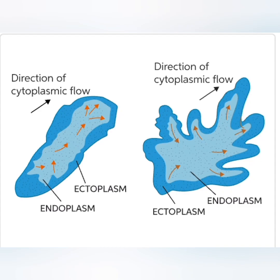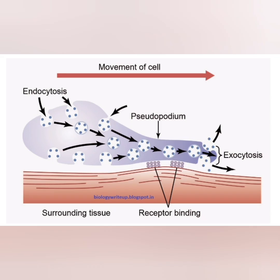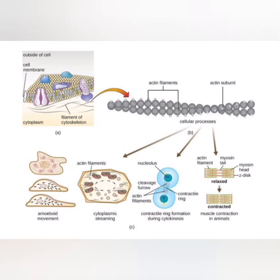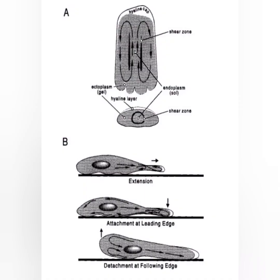The first is amoeboid movement. It is typical of amoeboid protozoa and some other forms. Movement is achieved by cytoplasmic projections known as pseudopodia, otherwise called false feet. They carry out phagocytosis, which is to eat or ingest other cells.